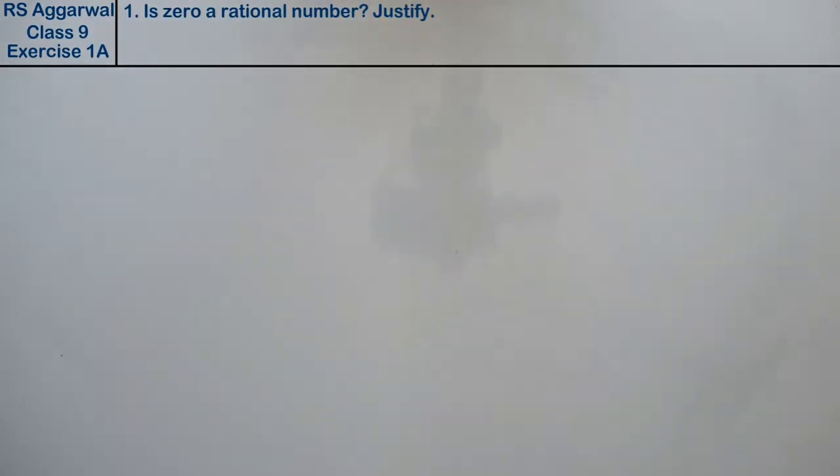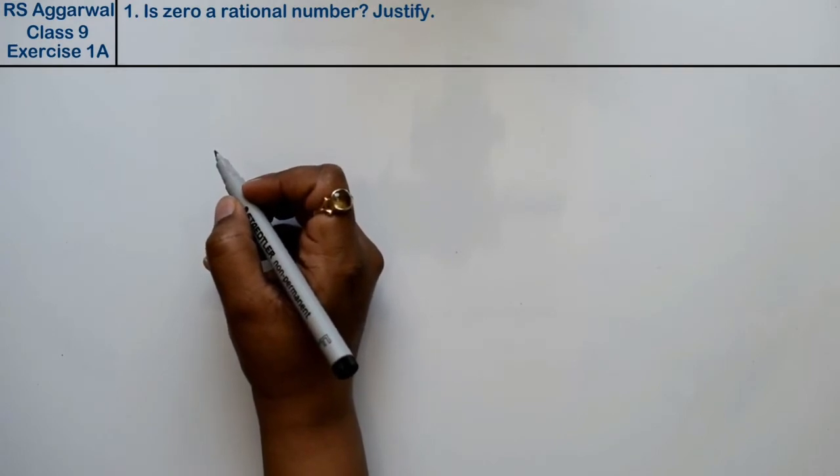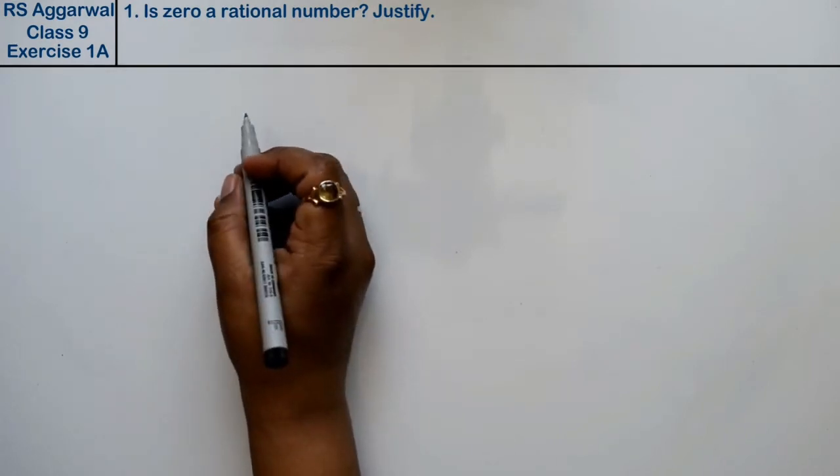Let's do question number first of exercise 1A, that is Number System. Question number 1 is: Is zero a rational number? Justify.